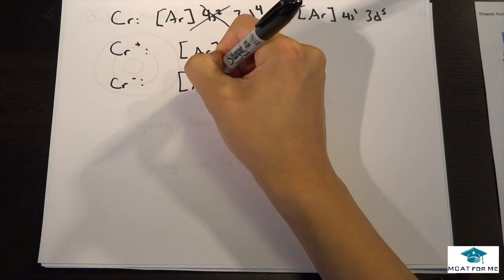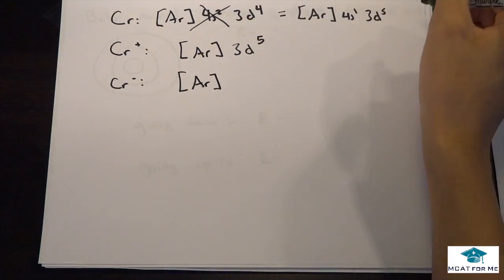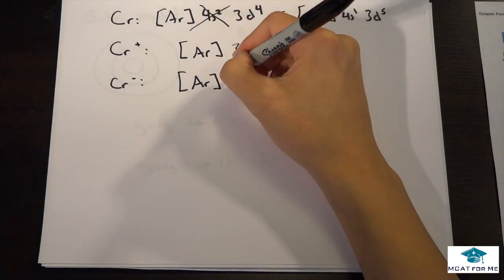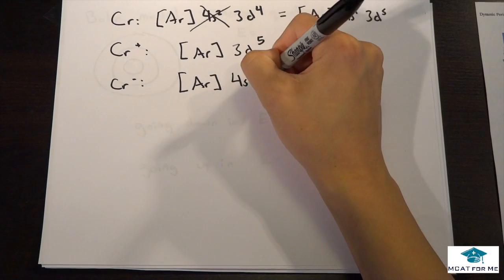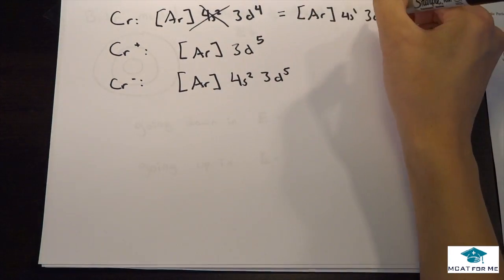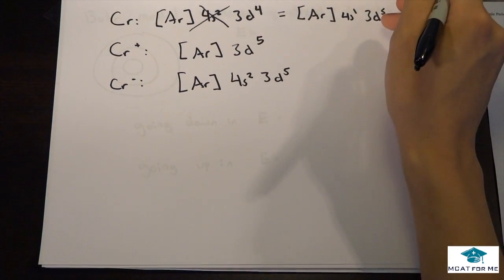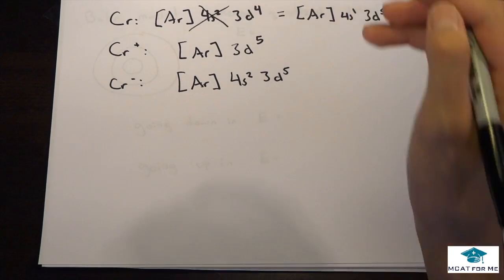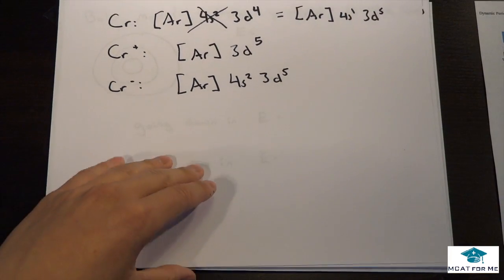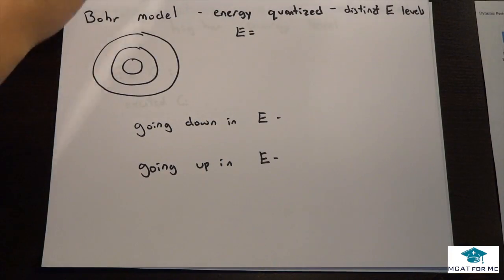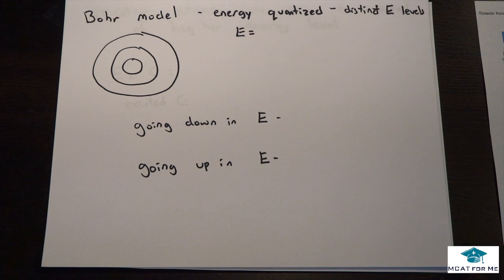So we took it off from the 4s¹ before we took it off from the 3d. For this one, we want to add to the lowest energy level, and that's what I was saying before. Instead of adding to the one that is the highest, we want to add to the lowest energy level, and that's 4s².